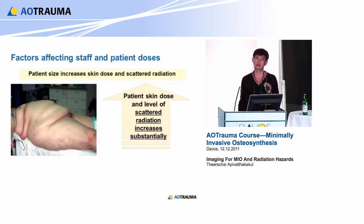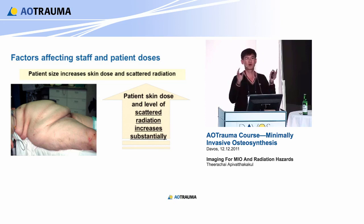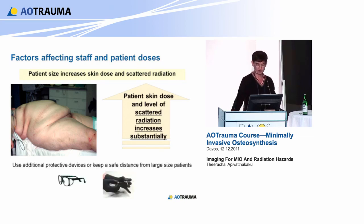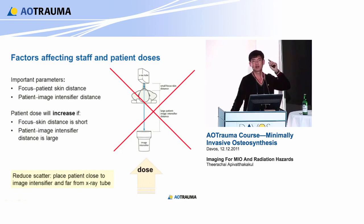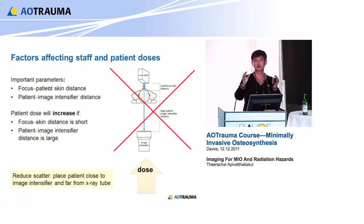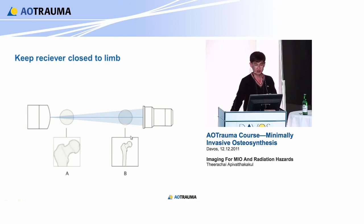How about patient size? Because the C-arm is automatic, it adjusts the dose by automatic exposure control. So if you have a bigger patient, more X-rays come out, so you need more protection - maybe a cochlear shield or protective clothing. How about the intensifier diameter? If you have a very small intensifier diameter, the dose is almost 3 times higher. If you put the X-ray tube very close to the patient, the patient receives a very high effective direct dose to the body and you get a very large picture. So if possible, keep the receiver very close to the limb - you get bigger pictures, less magnification, and it's safer for your patient.